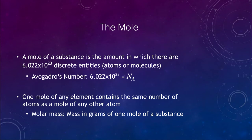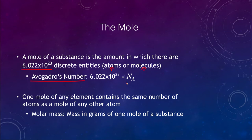The next concept is the mole. A mole of a substance is the amount containing 6.022 × 10²³ entities — atoms or molecules. This is also called Avogadro's number, sometimes written as NA. One mole of any element contains the same number of atoms as a mole of any other element, so a mole of hydrogen and a mole of gold each contain 6.022 × 10²³ atoms. The molar mass is the mass in grams of one mole of a substance.